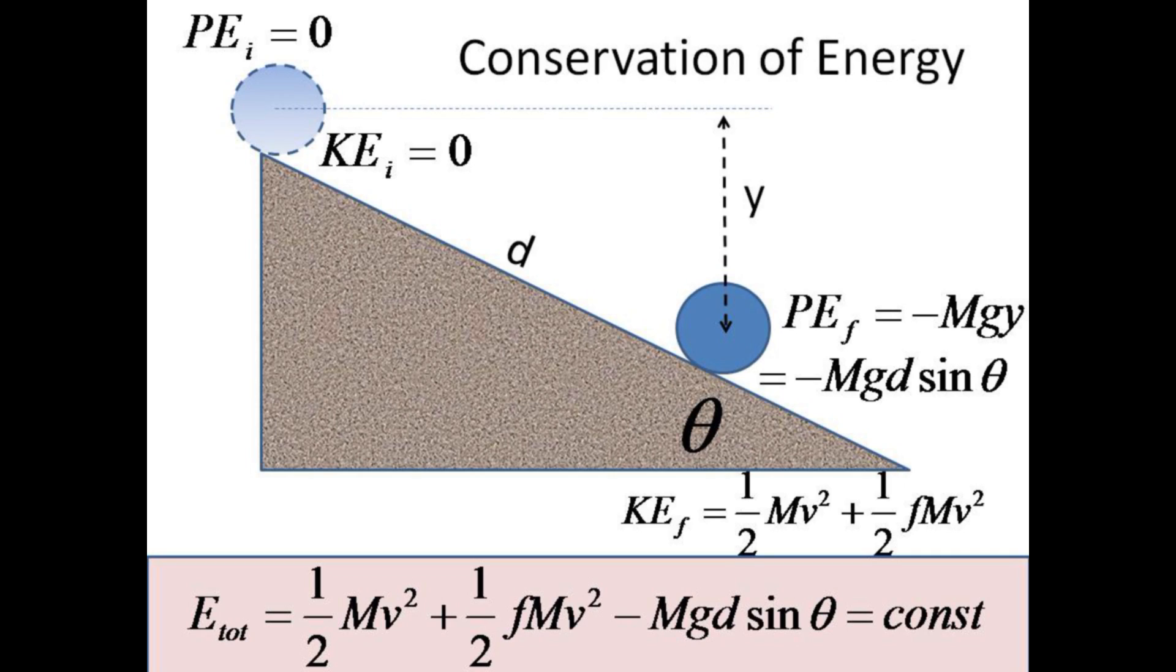Imagine an object rolling down an incline at angle theta. If the object begins at the top of the incline with zero kinetic energy, and we define the top to be zero potential energy, then it gains kinetic energy as it rolls downhill, and the potential energy becomes negative relative to where it started.